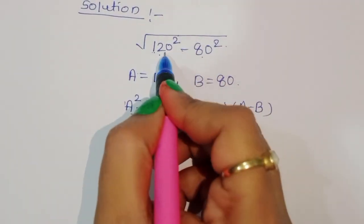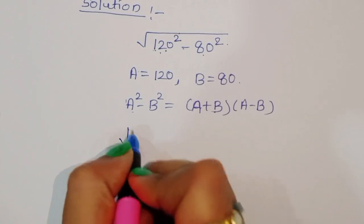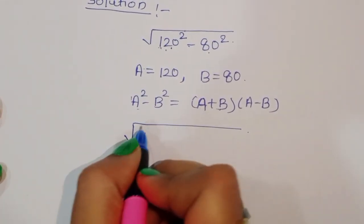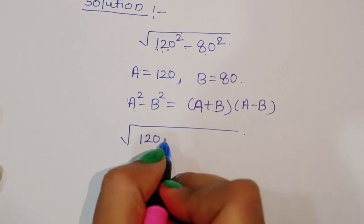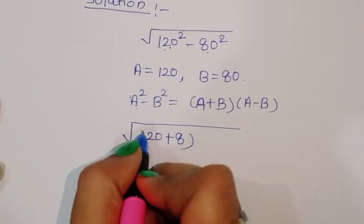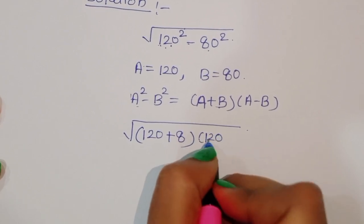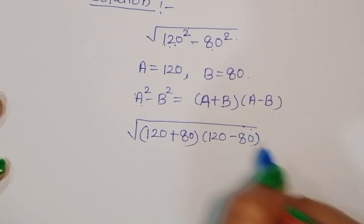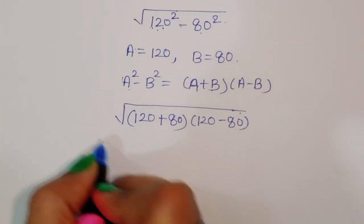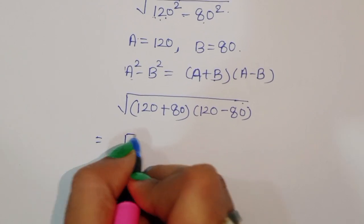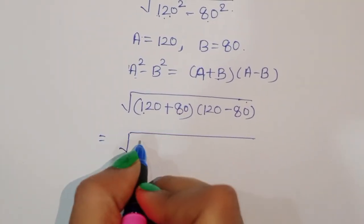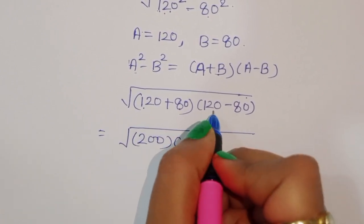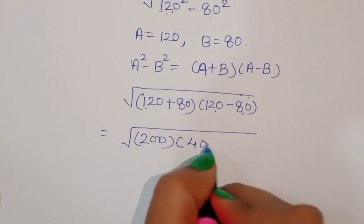Using this formula, A squared minus B squared equals (A + B)(A − B). So we get the square root of (120 + 80) times (120 − 80), which is the square root of 200 times 40.